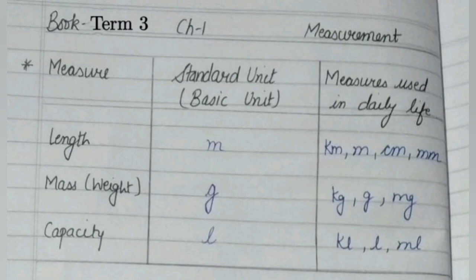Let's first revise the concepts which we have studied in our previous classes. We have studied about different quantities: length, mass and capacity. The basic unit of length is meter, the basic unit of mass is gram, and the basic unit of capacity is liter.